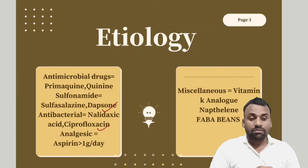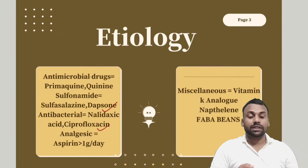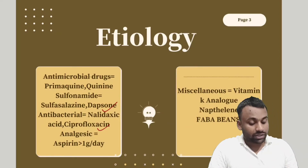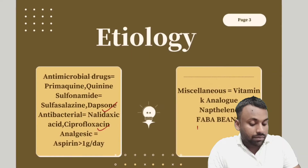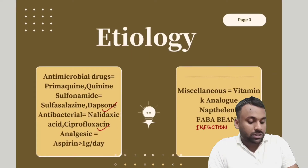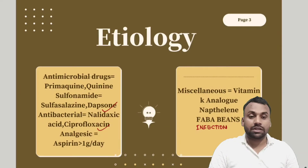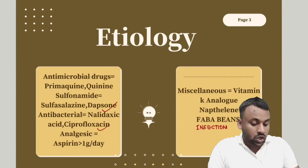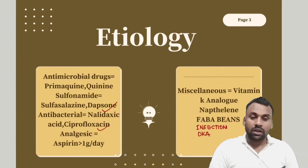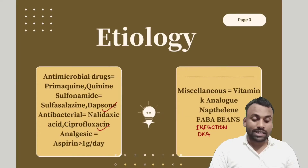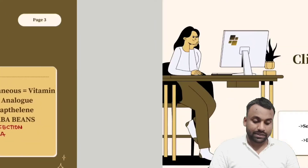Fava beans may cause intravascular hemolysis in G6PD deficiency. Other precipitating conditions include infections and serious diseases such as diabetic ketoacidosis, which can also lead to hemolysis in the patient.